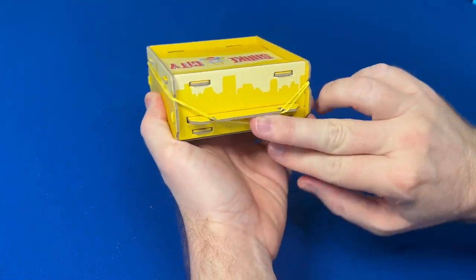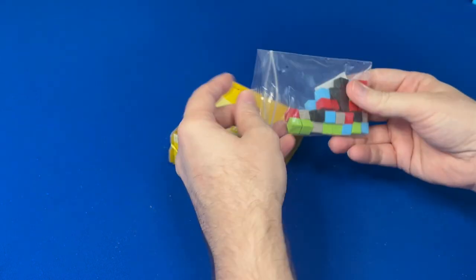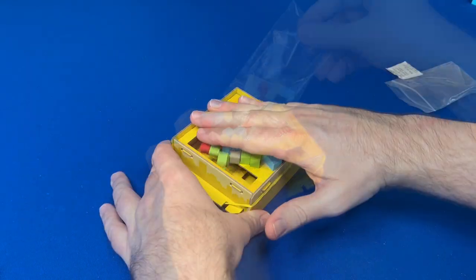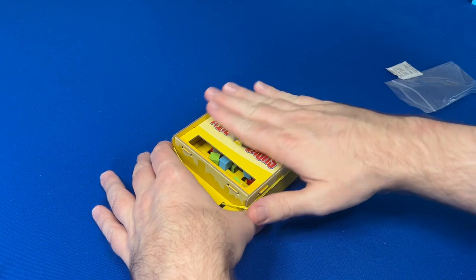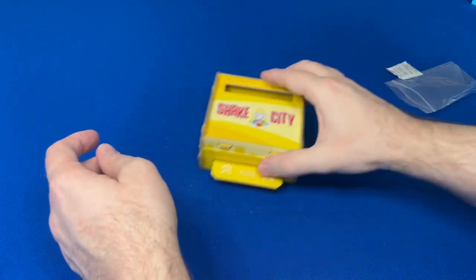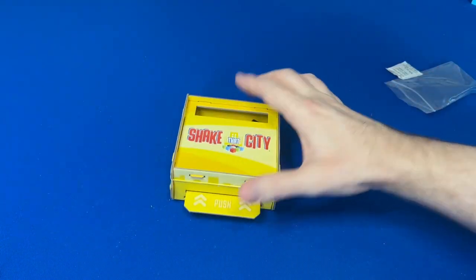Now we're ready to add some cubes and start shaking. Open your bag of cubes and dump them on top of the shaker, then push them all into the cube window and give it a few shakes. It's better to keep the shaker on the table and shake it from side to side rather than up and down. You might lose some cubes that way.